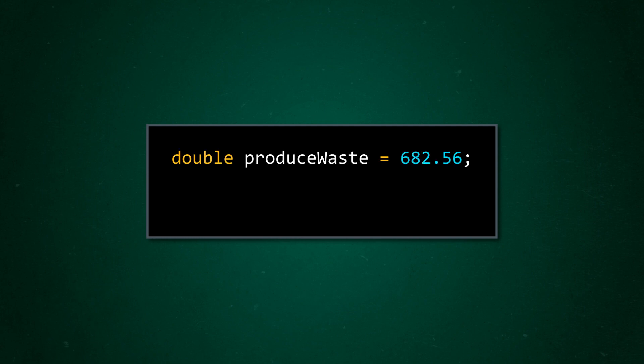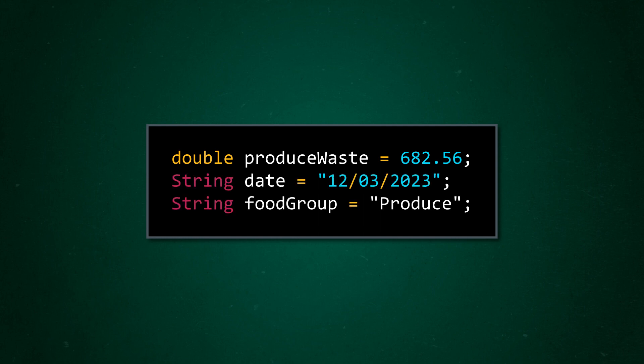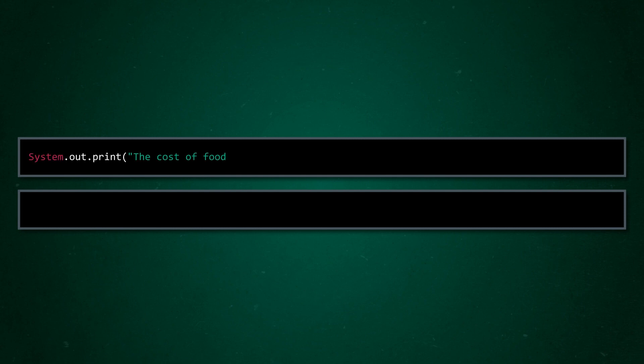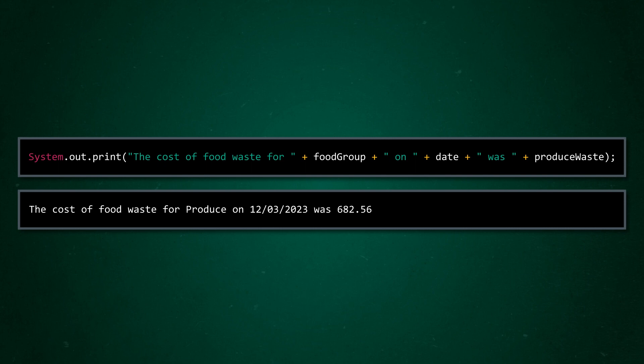First off, she wants to display the amount of waste per day by product type, so she'll need three different variables, since the data she's using might change depending on the time period she's looking at: a double for the waste cost, since it will be a number with a decimal, and then strings for the date and product type. We'll imagine we already have those variables assigned and have calculated their values — we just want to work on the output. We don't want to output a bunch of data without context, so we'll also need some literal data that turns each print statement into more of a sentence, then put all of these things together in a single print statement.